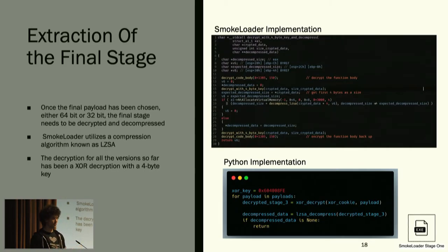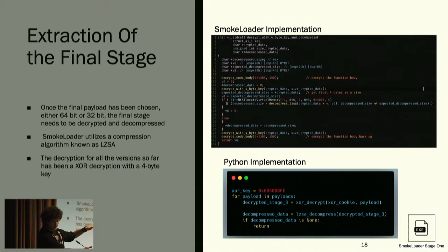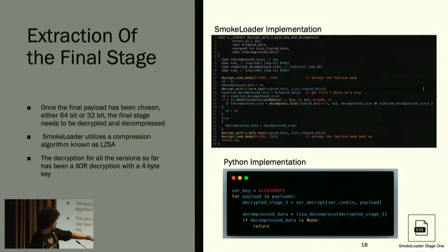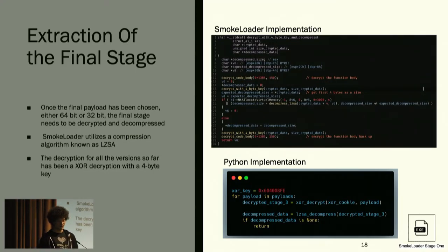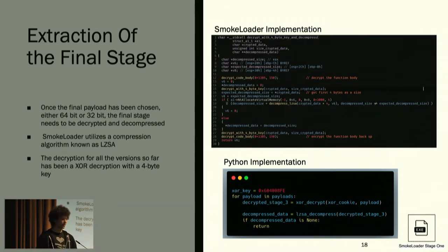Thinking about stage one in memory: it's broken into three chunks — the Smoke Loader stage one code at the top, then the 32-bit final stage, then the 64-bit final stage. To extract the final stage, it decrypts with a 4-byte XOR key and decompresses using the LZSA algorithm. Compression algorithms are incredibly difficult to implement. I found the LZSA implementation but only in raw assembly — no C implementation, no Python bindings. But once we can decrypt and decompress, we have our final stage.